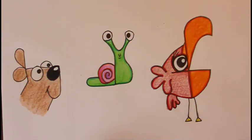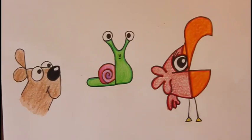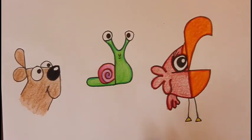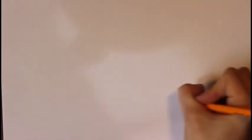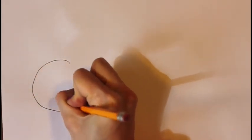All right, so here are our three drawings, and I'm going to start with the dog first, then I'll do the snail second, and I'll do the bird third. So, let's get started to do the dog drawing. We're going to start by writing the word dog in lowercase. Remember, if you mess up, you can always erase it.